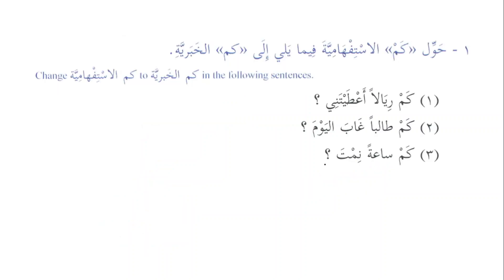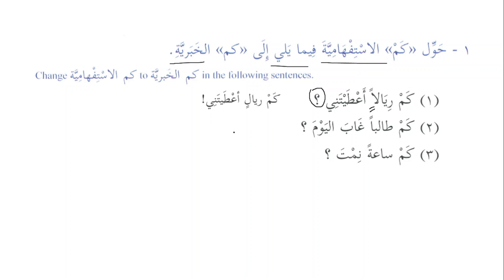Exercise: change the kam al-istifhamiyya in the following sentences to kam al-khabariyya. 'Kam riyalan a'taytani' — how many riyals did you give me? Change to kam al-khabariyya: 'Kam riyalin a'taytani' — the only change needed is to make the tamyiz majroor.